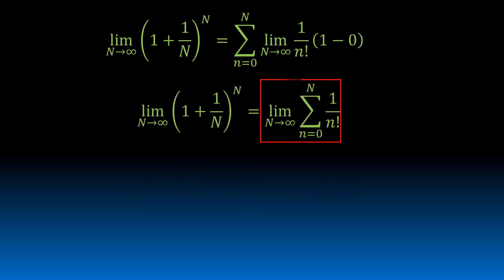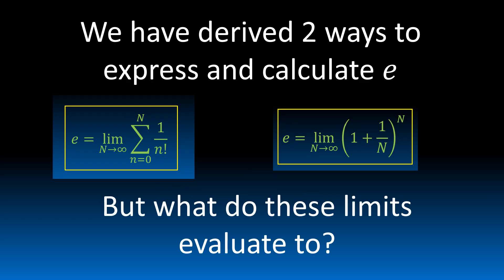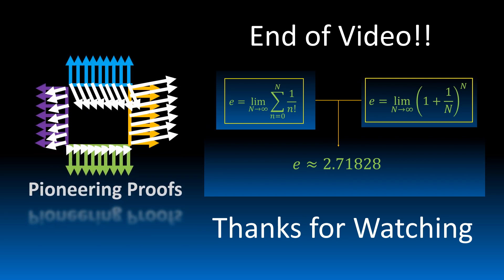After further simplification, we see e. The right side is the limit as big N approaches infinity of the sum from small n equals 0 to big N of 1 over n factorial — that is the e we derived earlier. So we have our new definition of e, which is actually the same as the previous definition, just expressed in a different form. We have derived two equivalent ways to calculate and express e. If you take the limit as big N approaches infinity in both cases, you get e is approximately 2.71828. And that is our e derivation — or proof, actually. Thank you for watching, and we'll see you in the next video.